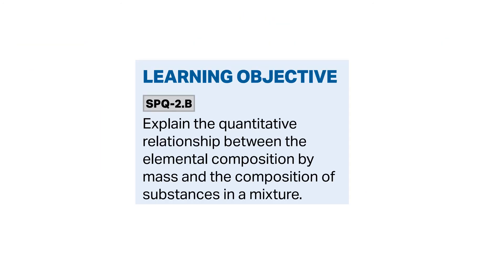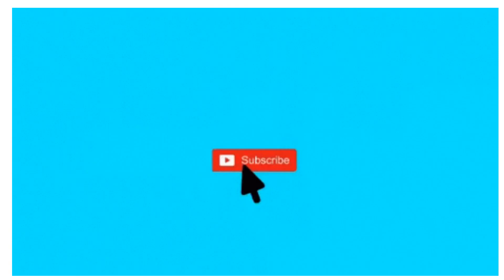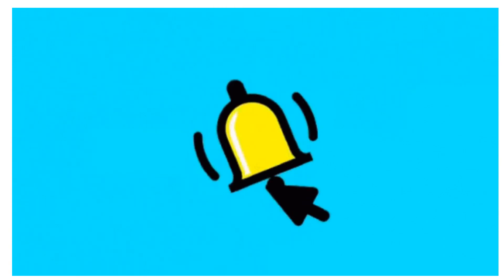The learning objective of this topic was to explain the quantitative relationship between the elemental composition by mass and the composition of substances in a mixture. I discussed what a mixture is, how to find the composition of a mixture, elemental composition, and the quantitative relationship using worked examples. Please like and subscribe to the channel Log Iota and press the bell icon. Thank you.